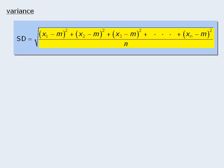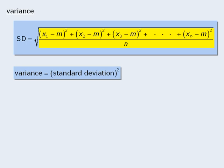Since the variance is equal to the number that we take the square root of in order to determine the standard deviation, we can say that the variance of a set of numbers is equal to the standard deviation of that set of numbers, squared. So for example, if a set of numbers has a standard deviation of 3, then the variance of that set will be 3 squared, which is 9.